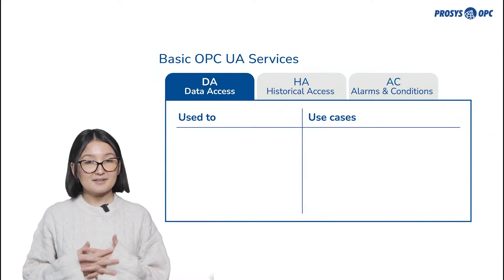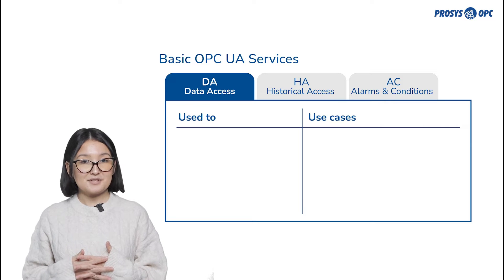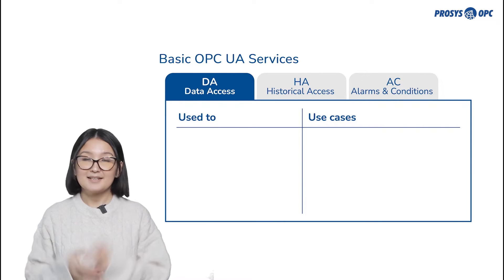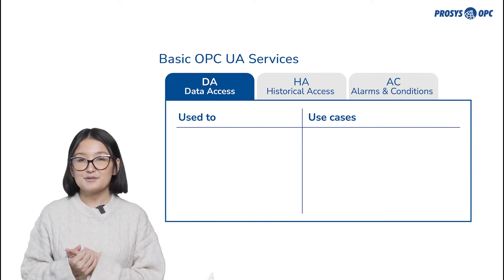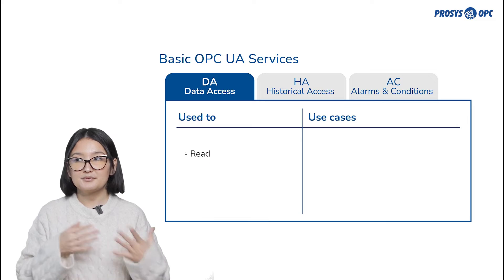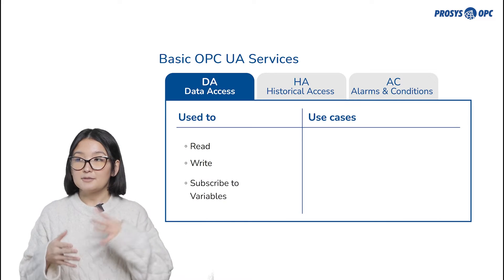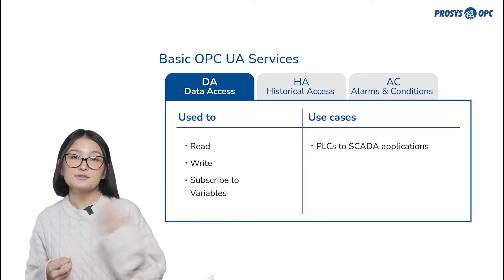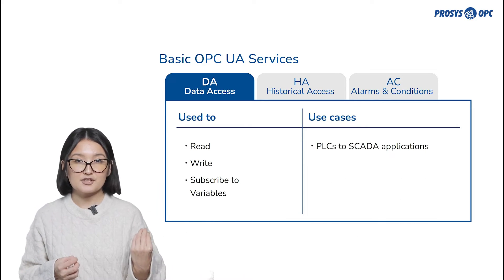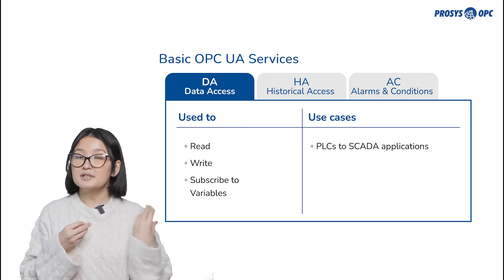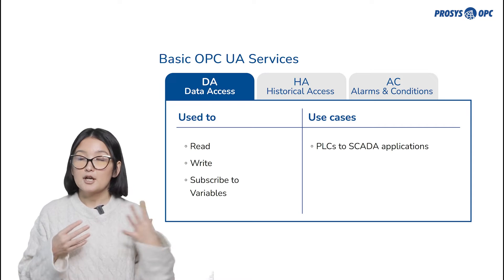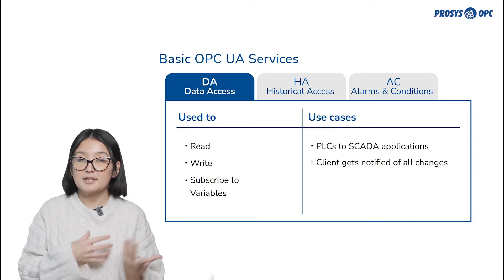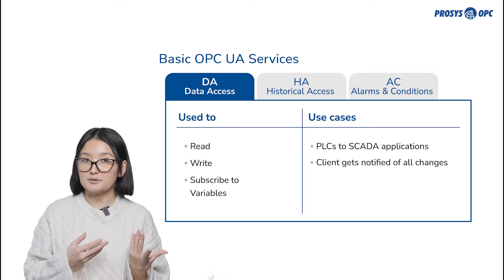By default, there are three basic data models in OPC UA, and those are pretty similar to OPC Classic. Data Access, or DA, is used to read and write current values. The most common use case is to read tags from PLCs to SCADA applications. Another use case is to create subscriptions, which means that the client gets notified about any possible changes in the values.